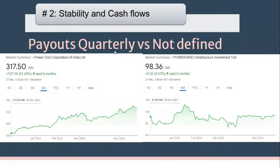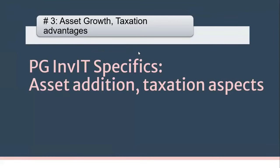On stability and cash flows: PG InvIT payouts are quarterly and mandated by SEBI guidelines, whereas Power Grid's dividends depend on management decisions. On price stability, Power Grid Corporation has seen a massive rise from around ₹210 to over ₹315 in the past six months — showing higher potential but higher risk. PG InvIT has been more stable in price over recent months.